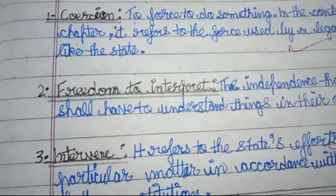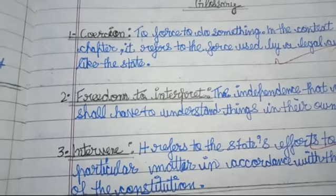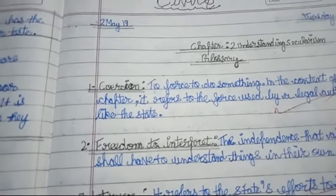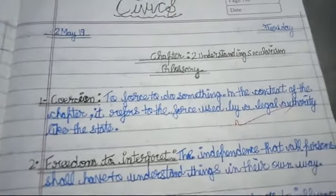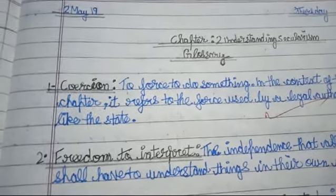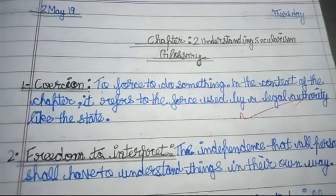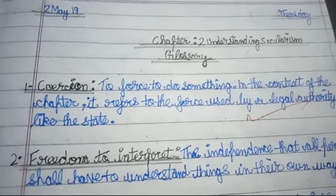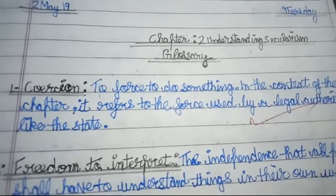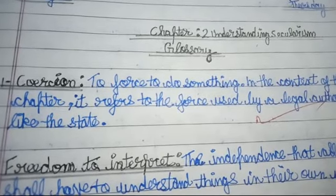The first definition is coercion — spelled C-O-E-R-C-I-O-N. It means to force someone to do something, that is, to make someone do something against their will by force. In the context of this chapter, it refers to the force used by an authority like the state illegally — using powers and authorities in a wrong manner.